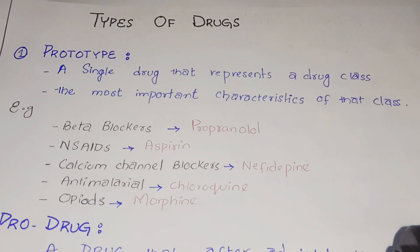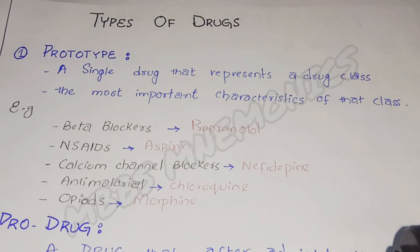Hello guys, today I'm here with another topic of pharmacology: types of drugs. There are different types of drugs — prototype drug, pro drug, orphan drugs, and placebo. First of all, we will discuss the prototype drug.